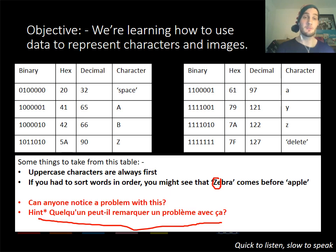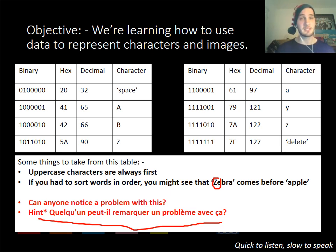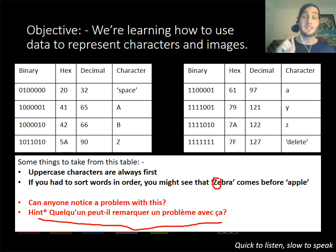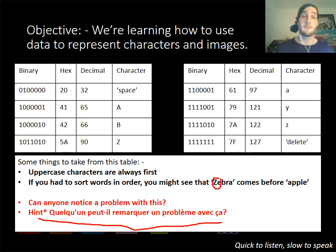Uppercase characters always come first, so if you had to sort the words 'zebra' and 'apple' in order, zebra would actually come first because of the capital Z. Bear that in mind in case you get an exam question. The problem with just having ASCII is that you could only represent 128 characters. What happens when you want to use accents, or when different languages come into play? We needed a bigger character set, which is why we moved on to Unicode.